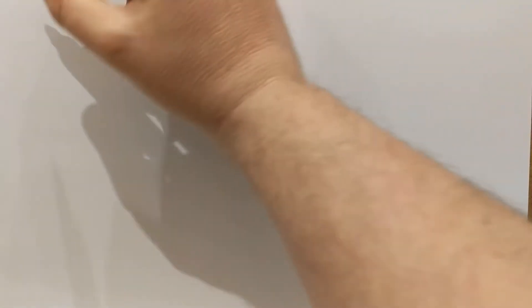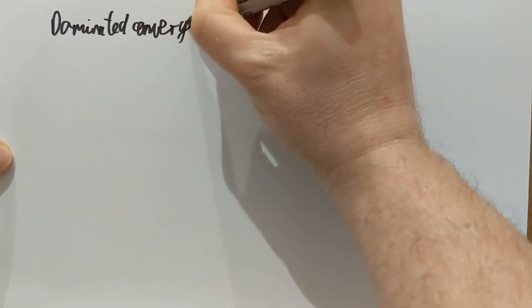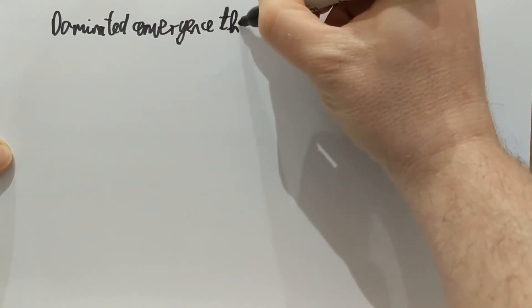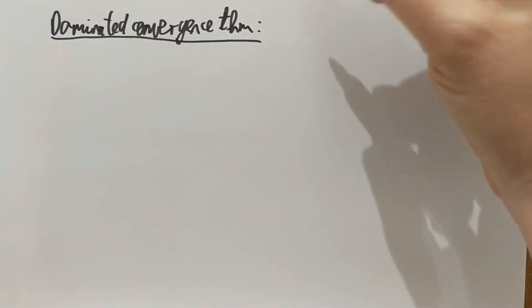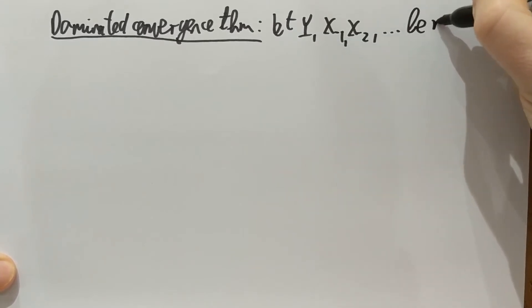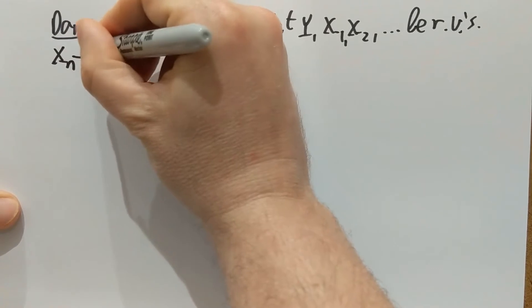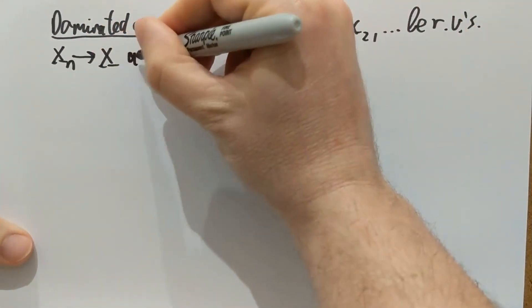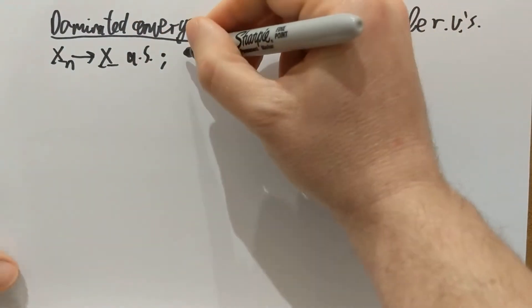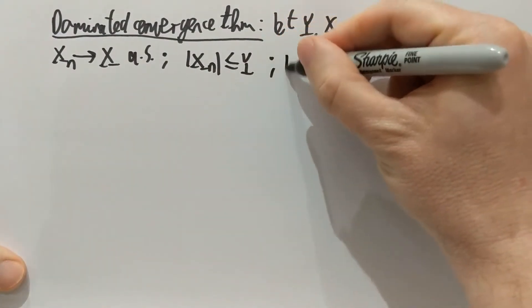Hi everyone! This next statement will give the second answer to when we can swap limits and expectations. This theorem is called the dominated convergence theorem. It says the following: let Y and X1, X2, and so on be random variables. Assume that the random variables Xn converge to yet another random variable X almost surely. Assume also that the Xn's in absolute value are dominated by the random variable Y, and this Y has a finite mean.